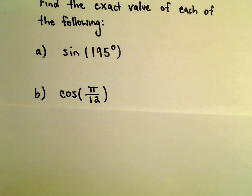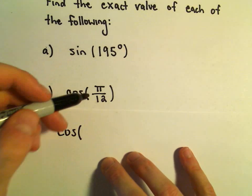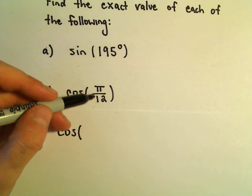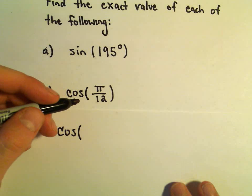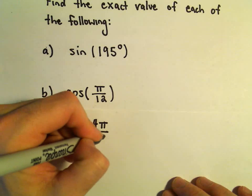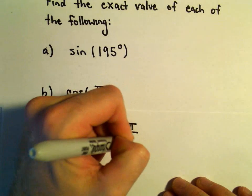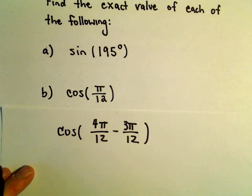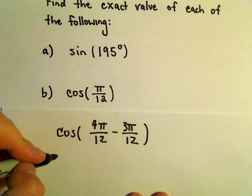And again, the tricky part is how to break this up. To get pi over 12, that's a small number. I need a couple angles that are close together. Well, let's see, 4 pi over 12 minus 3 pi over 12. 4 pi over 12 minus 3 pi over 12, that would give us 1 pi over 12.